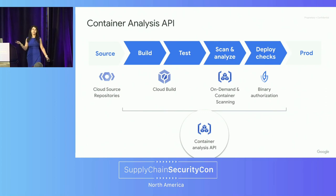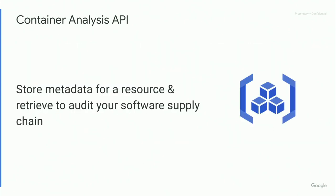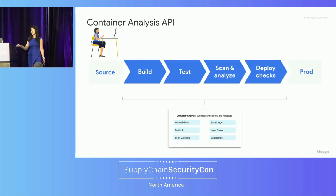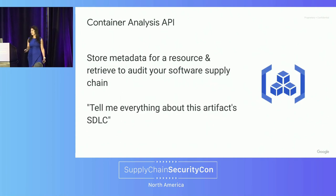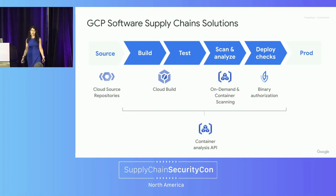Tying all these stages together is the Container Analysis API — another infrastructure piece and product my team owns. It allows you to store metadata for a resource and retrieve it to audit your software supply chain. Here's an example from the public docs showing another view of the same software supply chain — source, build, test, deployment checks, compliance checks — they can all be represented within the Container Analysis API and retrieved. The question it helps me answer is: tell me everything about this artifact's software development lifecycle. Tying it all together, we looked at Cloud Source Repositories, Cloud Build, on-demand scanning, container scanning, Binary Authorization, and the Container Analysis API as some of the existing solutions you can use to monitor and operate your production workloads in cloud on GCP.